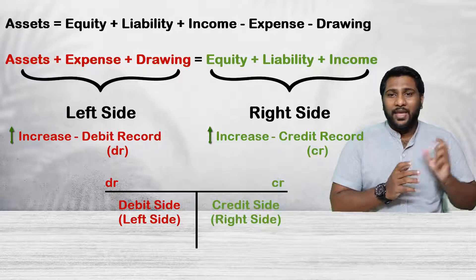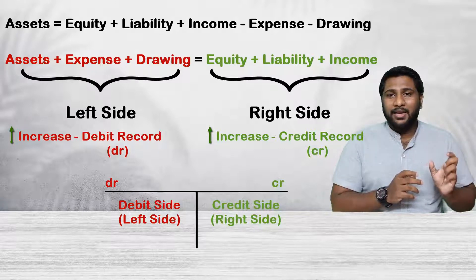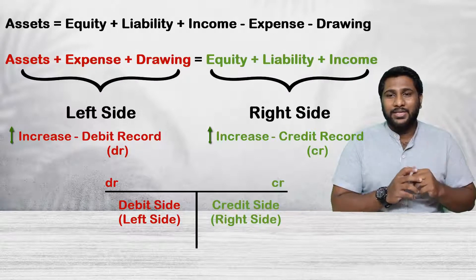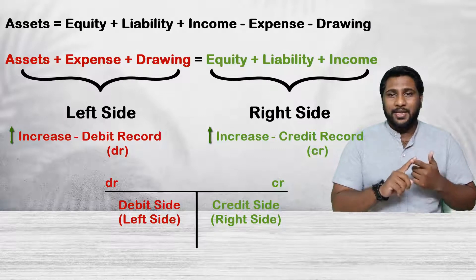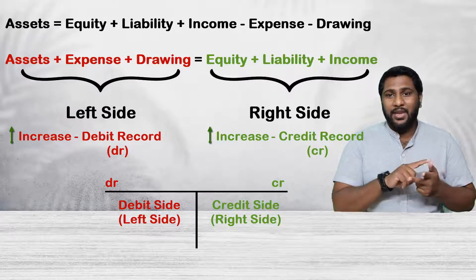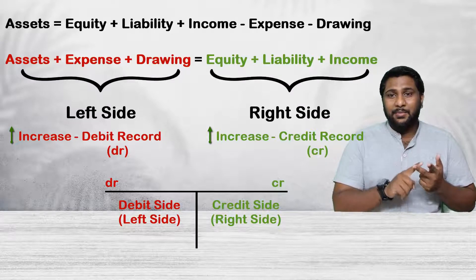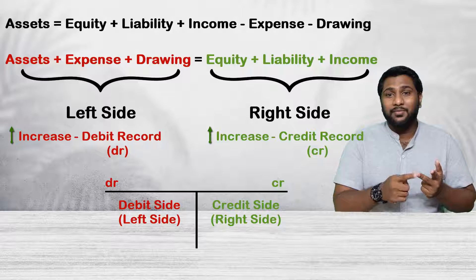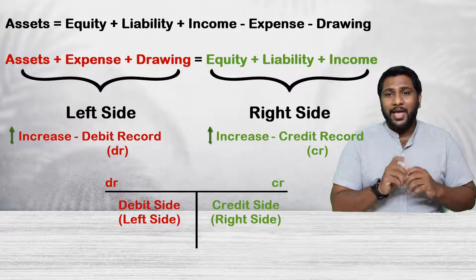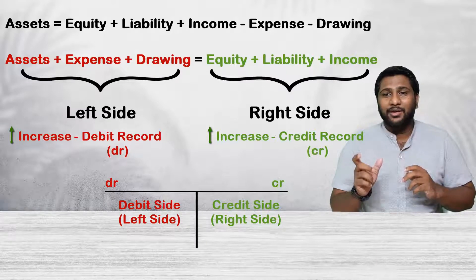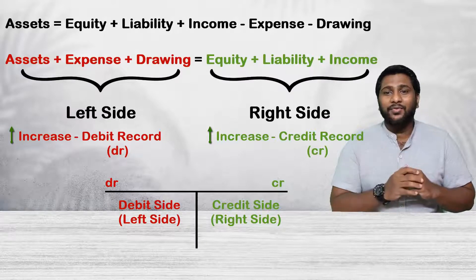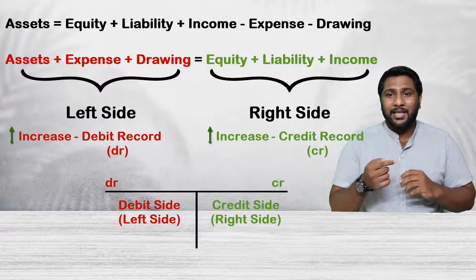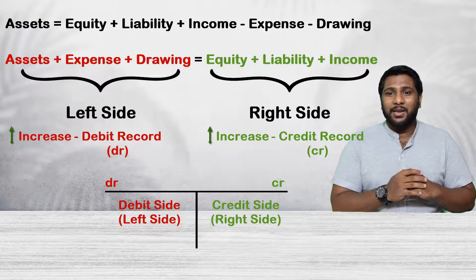So if any element increases from the left side of the equation — asset increase, expense increase, drawings increase — if any of these three elements increases, it's a debit entry. Then if any of these three elements decreases, it should be a credit entry. Similarly, if any of the three elements on the right side of the equation increases, it should be a credit entry, and if it decreases it should be a debit entry.